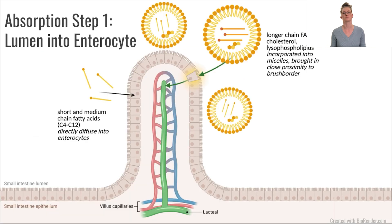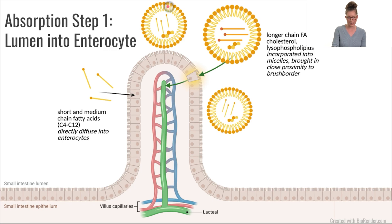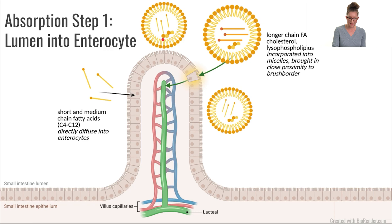Let's talk about step one: absorption from the lumen into the enterocyte. The fatty acids that are going to be incorporated into the micelles after they have been digested are the majority of the fatty acids in our diet — the longer chain fatty acids, around 14 to 16 carbons long. The same goes for cholesterol that has had its fatty acids cleaved off. Those will also be within the micelles. The micelles come into close proximity to the enterocytes, and then the fatty acids can just diffuse directly across into the enterocyte.